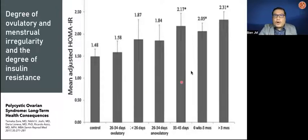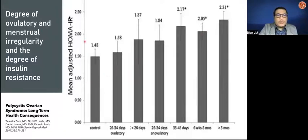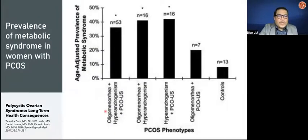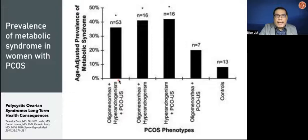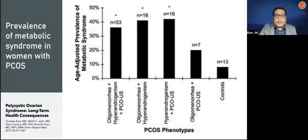Meaning, the longer you have oligoamenorrhea or amenorrhea, it corresponds linearly to insulin resistance. In another analysis looking at metabolic syndrome in women with PCOS, the adjusted prevalence of metabolic syndrome in patients with PCOS is seen in those patients with phenotype A, B, and C versus D — and these are patients particularly with hyperandrogenism as part of the Rotterdam criteria.